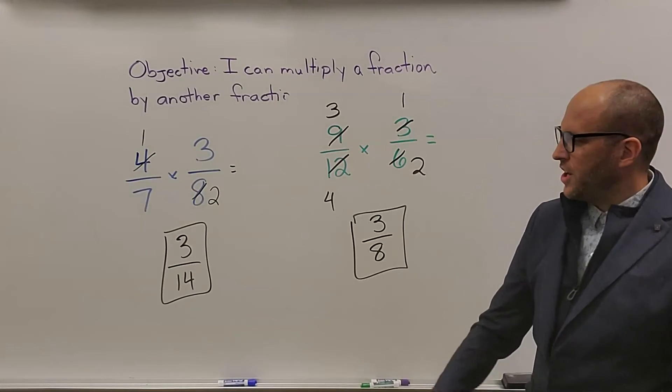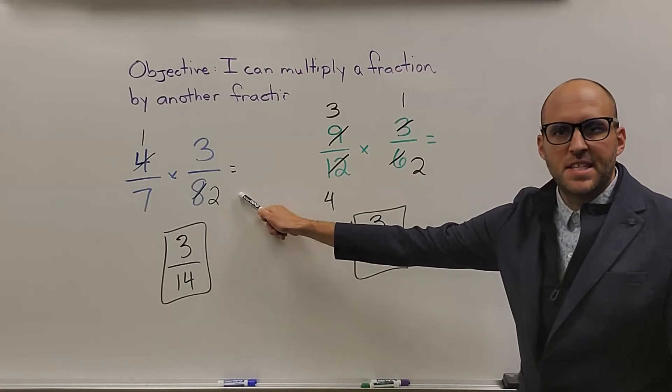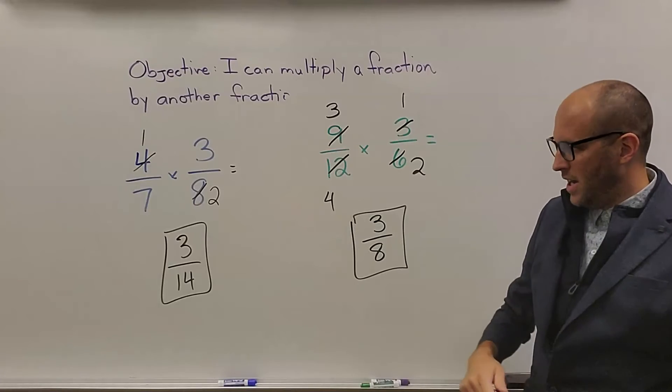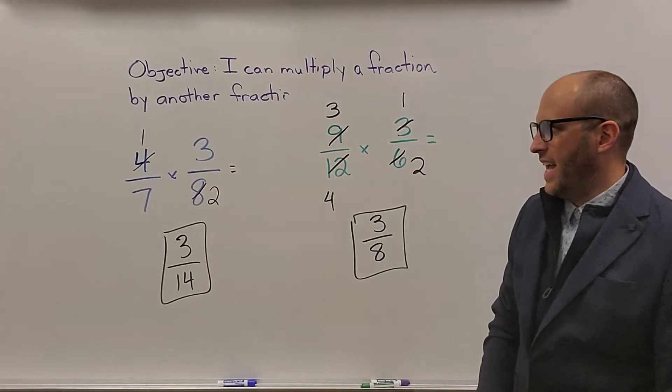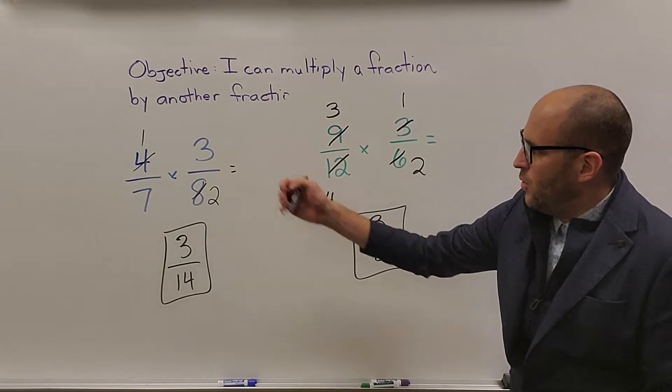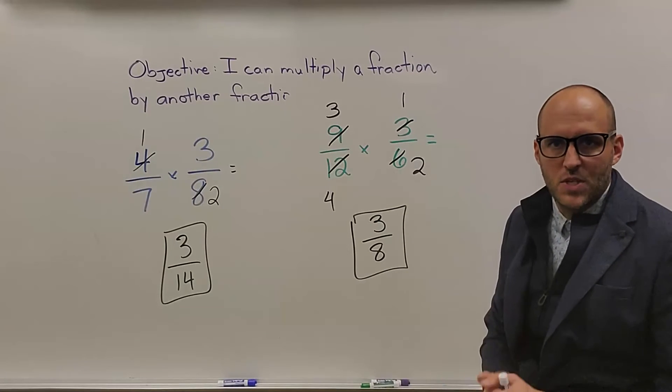All right, mathematicians. Our answer to the first problem was 3/14. We only had to simplify one problem here. 2 goes into 4 and 8. Actually, 4 goes into 4 and 8, which is the better one. If you did 2, you'd have to simplify again. And we multiply 1 times 3 and 7 times 2, we get 3/14. So, hopefully, that's what you got there.